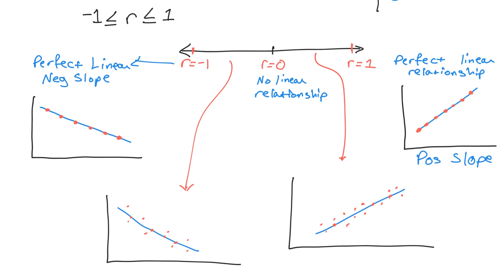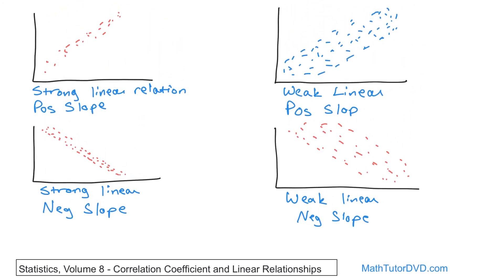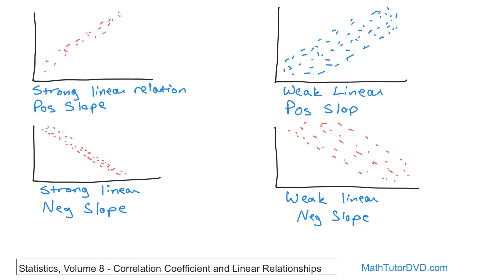That is in a nutshell what the correlation coefficient is telling you. I spent so much time on this because it's actually more important to know what it's telling you than how to calculate it. The calculation is a little bit messy — not hard, just ugly looking. I really want to focus on interpreting the answer so that when you go to Microsoft Excel or your calculator and get a correlation coefficient of 0.7, you know what it means. Follow me on to the next section where we'll finally introduce the correlation formula and calculate it.